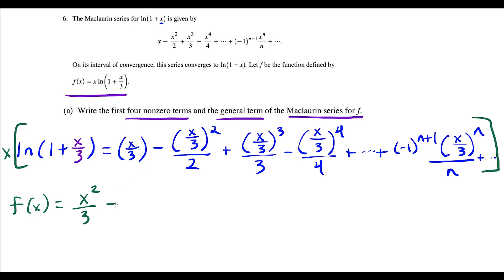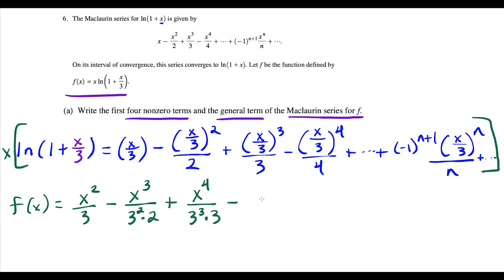Now we're going to do the algebra all in one step. We have minus — this will make x to the second over 3 squared. So when we do x times x squared, that's going to make x to the third. The 3 squared we write in the denominator next to the times 2. Then we have plus x to the third times x, giving us x to the fourth, and the 3 to the third power goes in the denominator times 3. And the last non-zero term is minus x to the fifth over 3 to the fourth times 4.